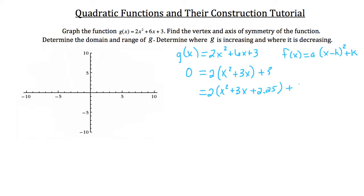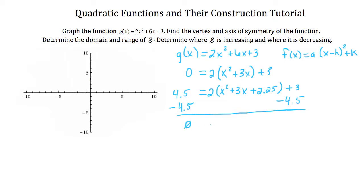Remember, this 2.25 is inside a parenthesis set being multiplied by 2, so on the left side we don't add just 2.25 — we add twice that, which is 4.5. We want zero on the left, so subtract 4.5 from both sides. On the right we have 2 times (x² + 3x + 2.25), and since 3 minus 4.5 is negative 1.5, we subtract 1.5 after that parenthesis set.